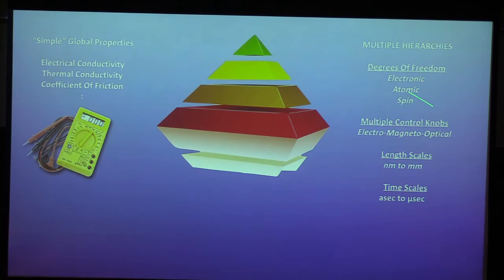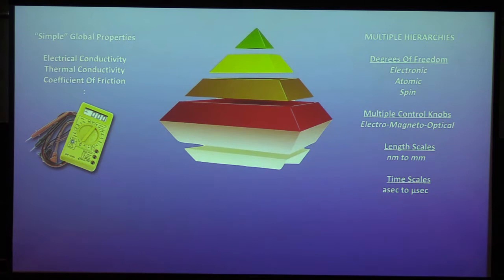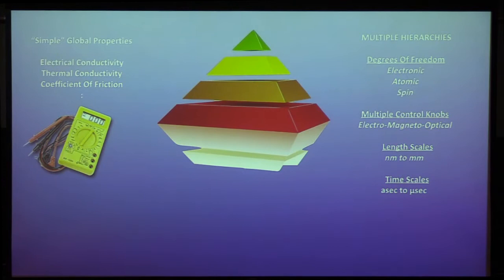And I think the reason is that these integrative properties, like electrical conductivity, thermal conductivity, and friction, and so on, are arising from many, many degrees of freedom in the materials, which can be electronic, or in the atomic position, or spin. And also there are many control knobs that these materials respond to, among which electric field, magnetic field, optical, and pressure, and other things.